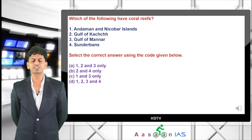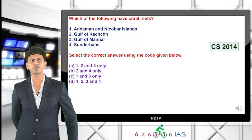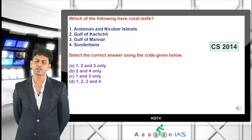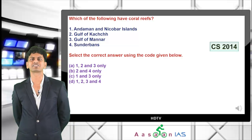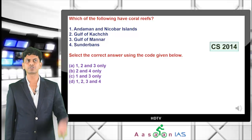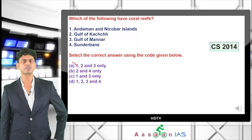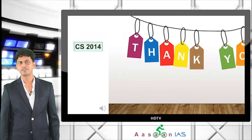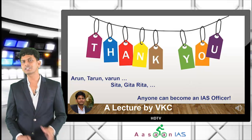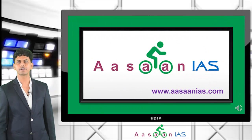A 2014 UPSC prelims question asked: which of the following have coral reefs — Andaman and Nicobar Islands, Gulf of Kachchh, Gulf of Mannar, and Sundarbans? Andaman and Nicobar — yes, has corals and mangroves. Gulf of Kachchh — yes, both corals and mangroves. Gulf of Mannar — yes, both corals and mangroves. Sundarbans — no, only mangroves, no corals since it is on the eastern coast. So options 1, 2, 3 are correct — answer is option A.